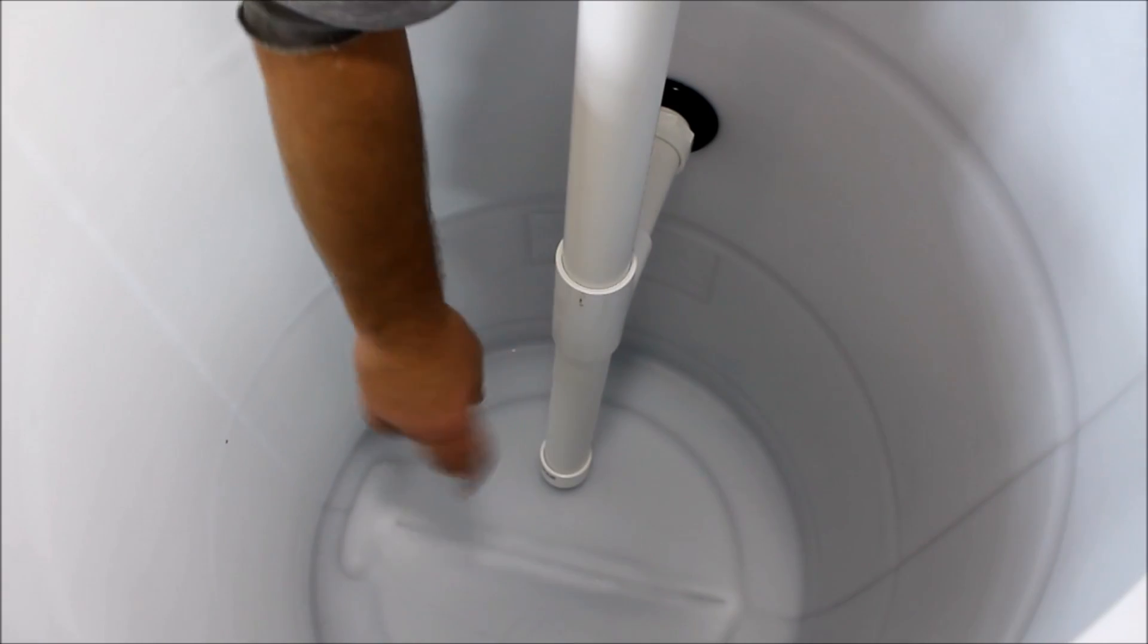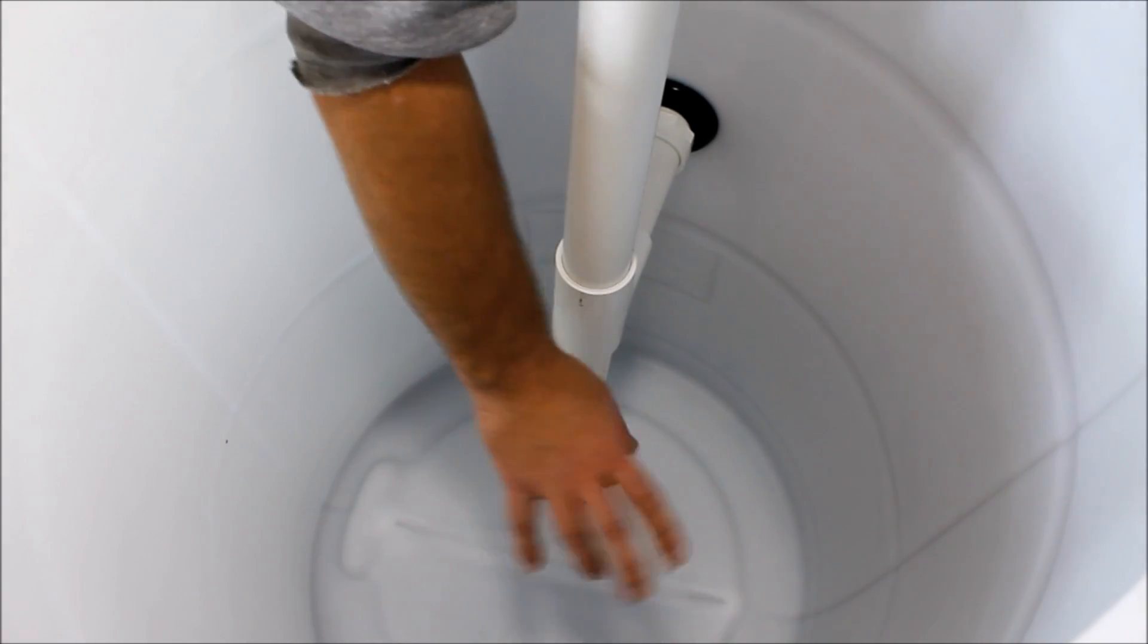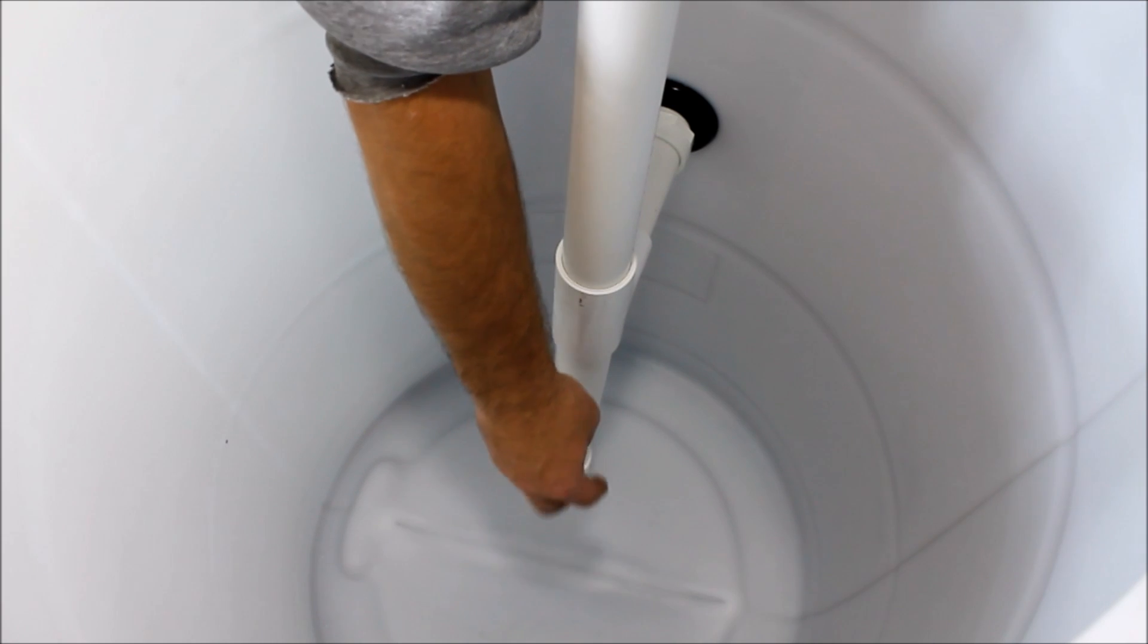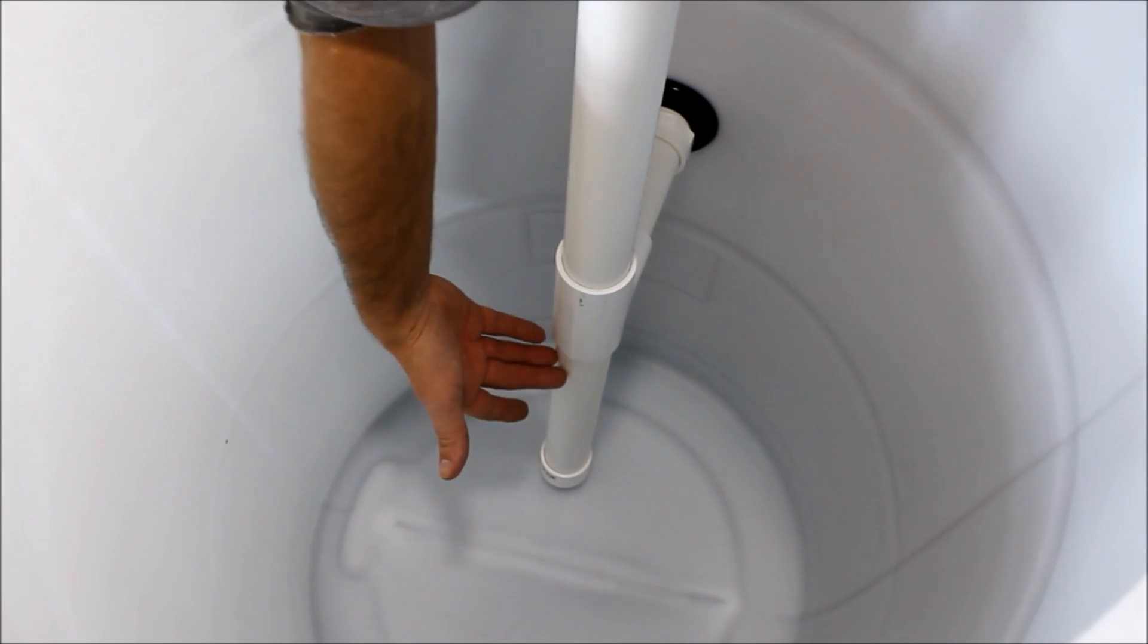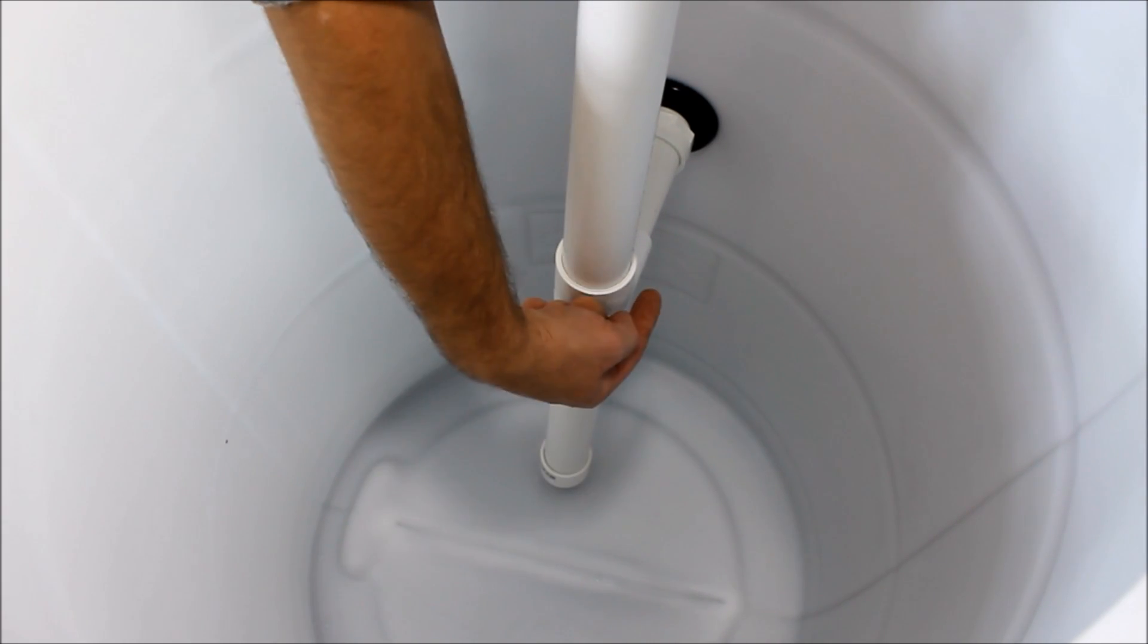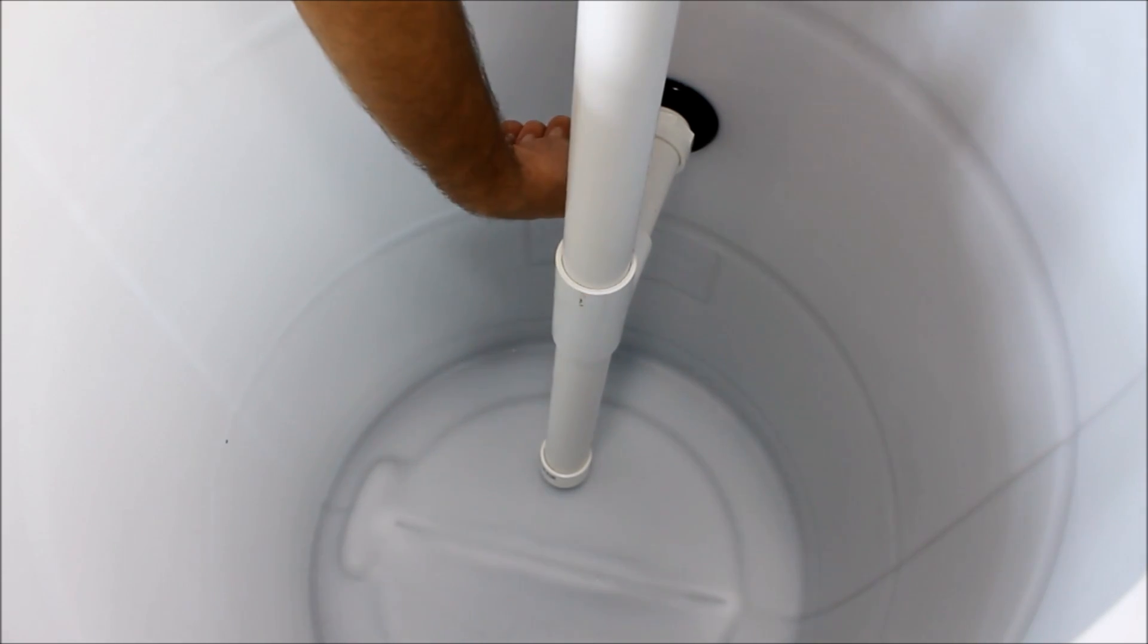The way I have it set up is this just sits about a half to three quarters of an inch off the bottom of the barrel. As the fish swim around, they stir up any of their waste and any uneaten fish food. It all migrates towards the tube, and then it slowly lifts up and exits out through the overflow here.